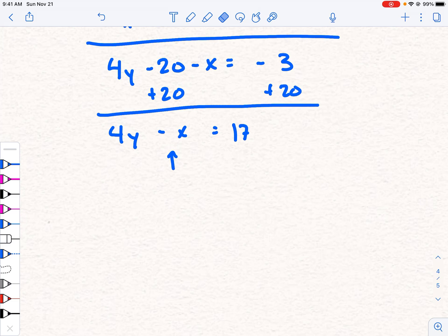So in this example, my a value, the thing in front of x, is negative 1. So I'm going to change a couple things around. First, I'm going to move some things.